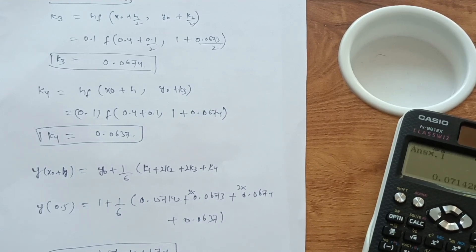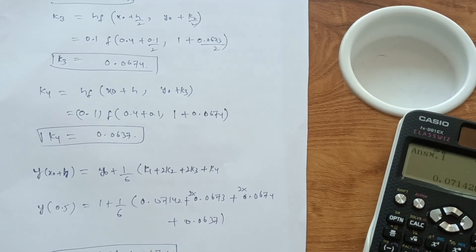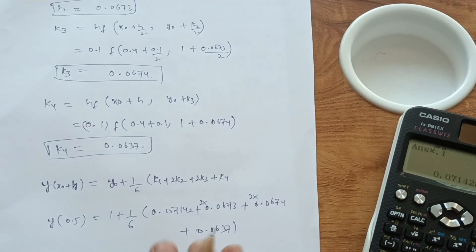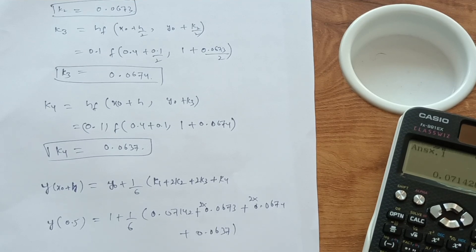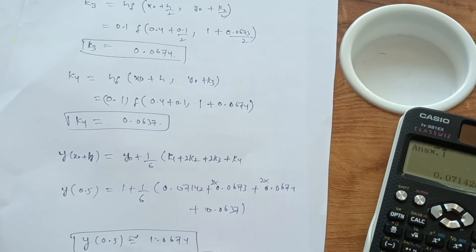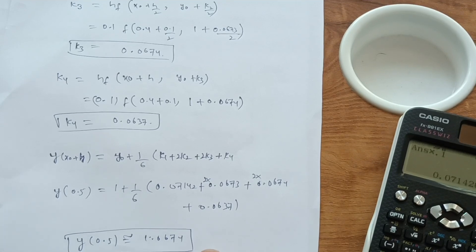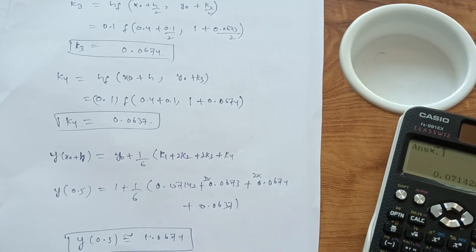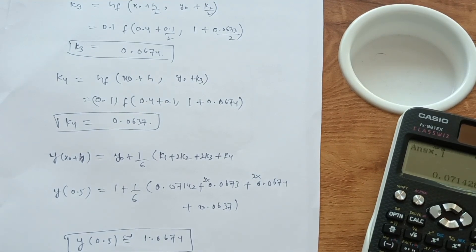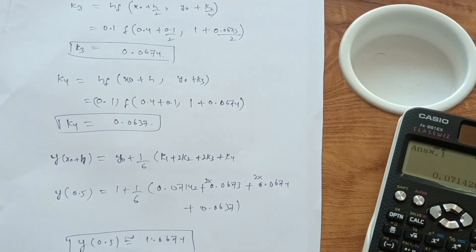So this is the Runge-Kutta method — a very simple method. If you just calculate these values you will easily get 7 marks. The calculation part is easy; the only thing you have to memorize is the formula. You put the values and get the correct answers — better than Euler's method and modified Euler's method. Thanks for watching my video.